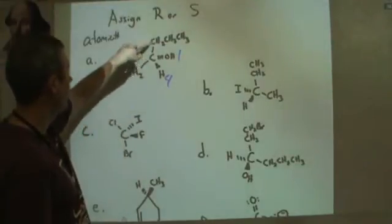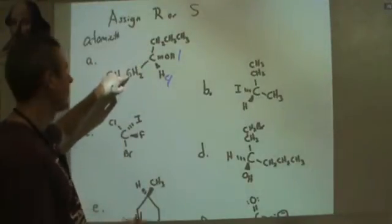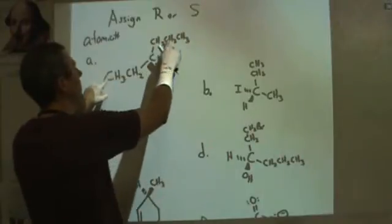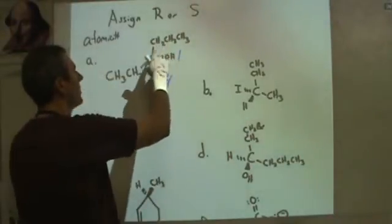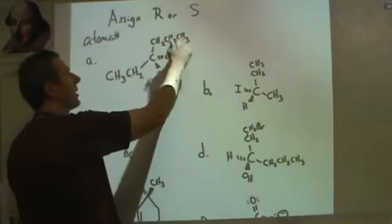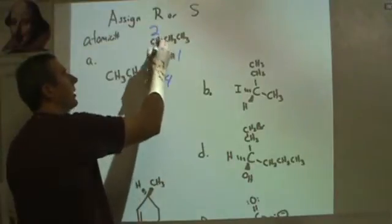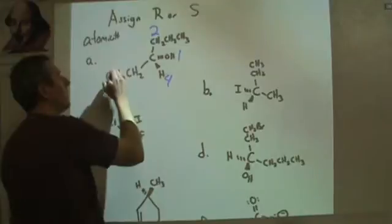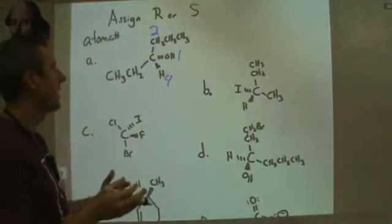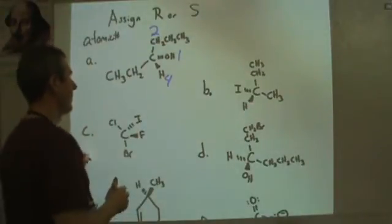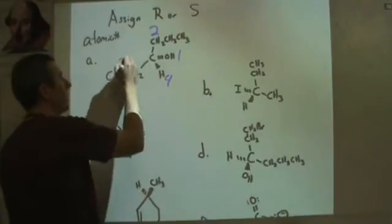Then the next one I go and I have six and six, so those are a tie. Then I'm going to move out again and I have a six and some ones, but in this one I have one more six, and so this is going to be my second priority. You keep following out the chain to see who will have the highest atomic number at each next step. And then this one would be my third priority.